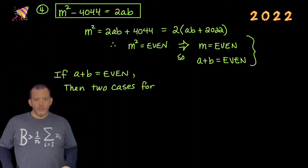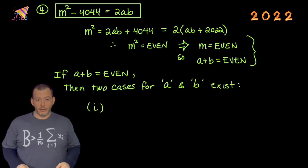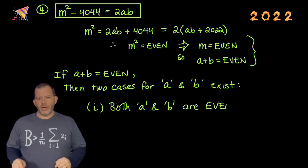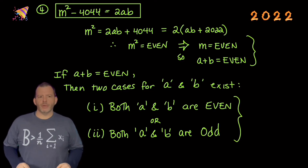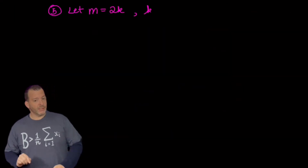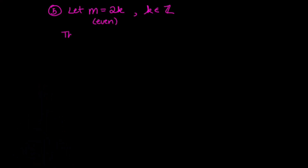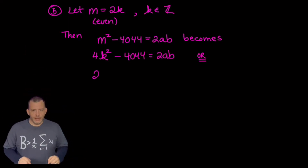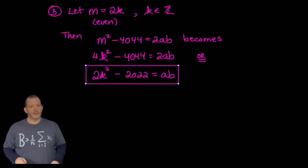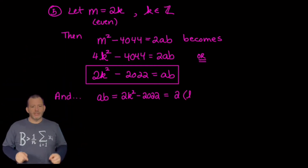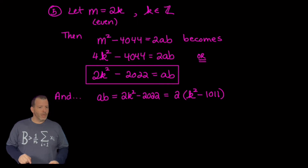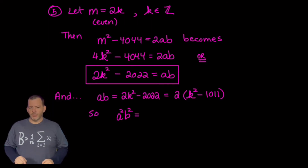Using our new equation, we can show that the integer m is even — a + b is an even number. Splitting into two cases: either both a and b are even, or both are odd. Since m is an even integer, we can write it as 2k where k is some other integer. Our equation then becomes 2k² − 2022 = ab. Since ab has a greatest common factor of two, a² and b² are also even numbers, meaning both a and b definitely have to be even.